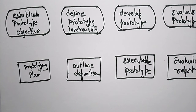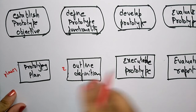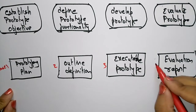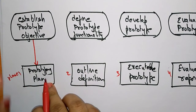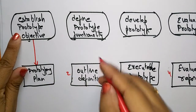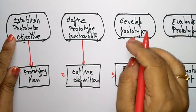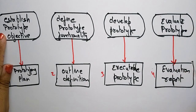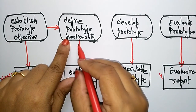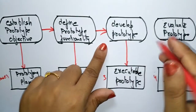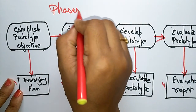These are all the different phases of the prototype. Phase one is prototyping planning, phase two is outline definition, phase three is executable prototyping, and phase four is the evaluation report. Prototyping planning establishes the prototype objective, next it defines the prototype functionality, after that it develops the prototype, and finally it evaluates the prototype.